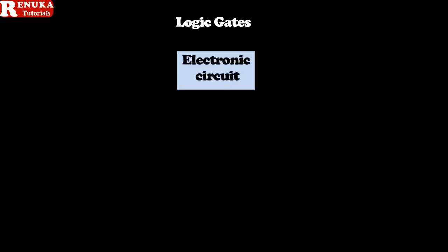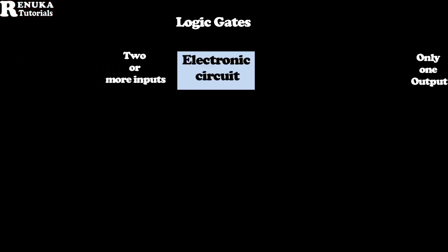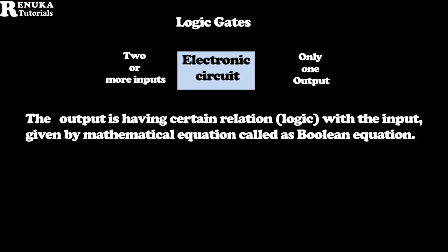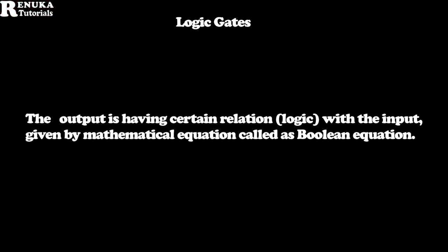Hello students, today we will discuss logic gates. A logic gate is an electronic circuit having two or more inputs but only one output. The output has a certain relation with the input and it is given by a mathematical equation called a Boolean equation.